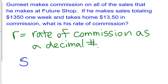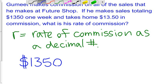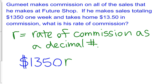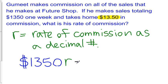you take the amount of sales — so let's say we take $1,350 — and you multiply it by the decimal value of your rate of commission. So if we make R the rate of commission as a decimal number, then we can simply say that $1,350 times R is going to give us our commission. And if we go back to the problem, we see our commission is $13.50. So this is going to be equal to $13.50.